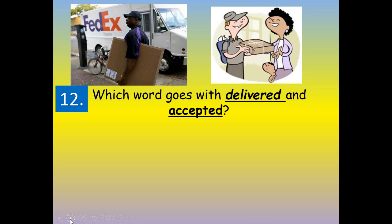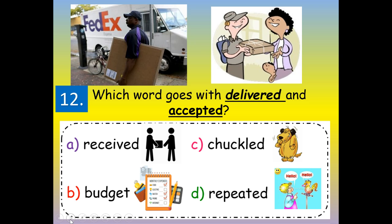Number twelve: which word goes with delivered and accepted? Would it be received? Budget? Chuckled? Or repeated? Received — R-E-C-E-I-V-E-D. The root word is receive, and when you receive something, you accept it and it's delivered to you. Received.